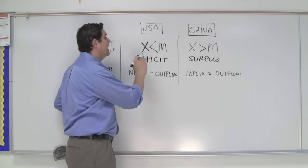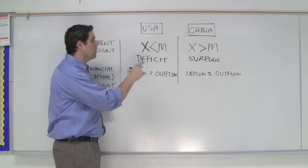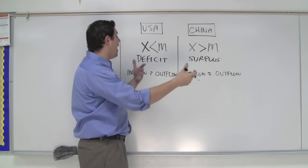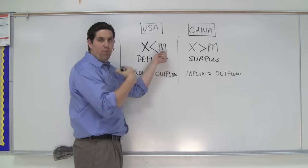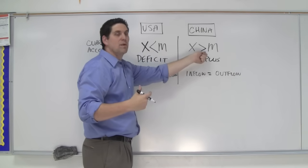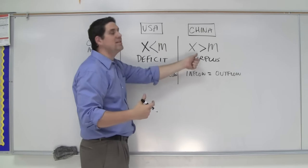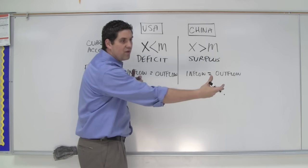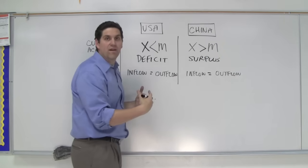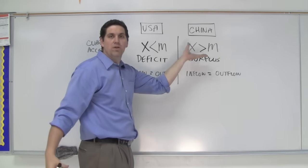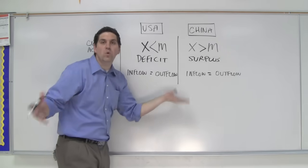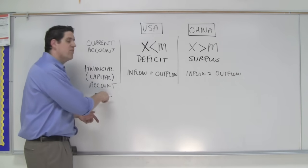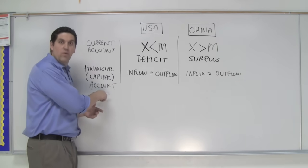If the United States has a trade deficit with China, what that means is they're spending all this money to buy those imports, and China uses some of that money to buy United States imports, but still the United States is buying more from them than they're buying from us. So China has all these United States dollars. The question is what do they do with those dollars? That's where the financial account or the capital account comes in.